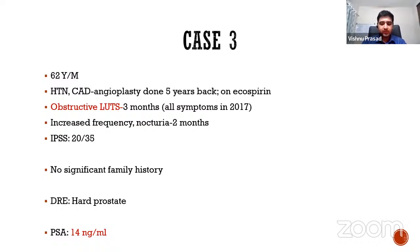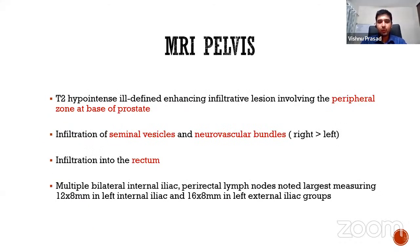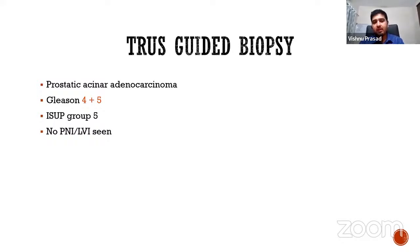Case 3: a 62-year-old male with hypertension, a known cardiac patient who underwent angioplasty five years ago and is on a single antiplatelet. He came with obstructive LUTS since three months — symptoms started in 2017 — with irritative LUTS including frequency and nocturia. High IPSS score, no significant family history, rectal examination showed a hard prostate, initial PSA was 14. MRI pelvis showed an ill-defined infiltrative lesion at the peripheral zone at the base, infiltrating seminal vesicles and neurovascular bundles bilaterally, infiltration into the rectum, and multiple bilateral internal iliac, perirectal, and left internal iliac nodes measuring approximately 1.6 cm. TRUS-guided biopsy: Gleason 4+5, grade group 5.